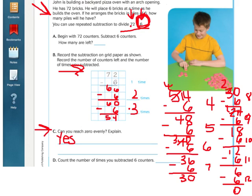So count the number of times I subtracted the six counters. That was 12 times. So my quotient or my answer to 72 divided by six is 12. And that's how you use repeated subtraction to divide.